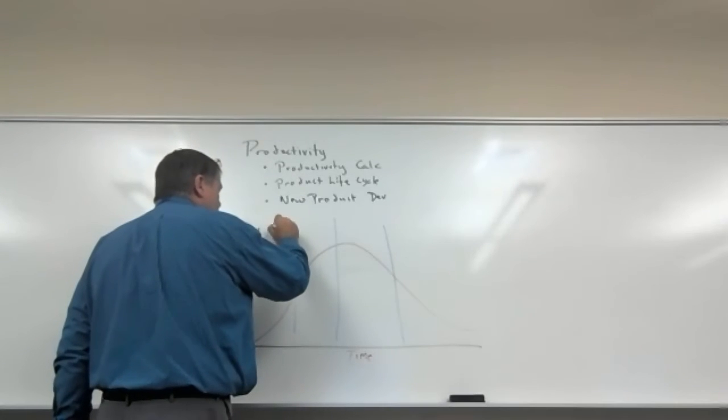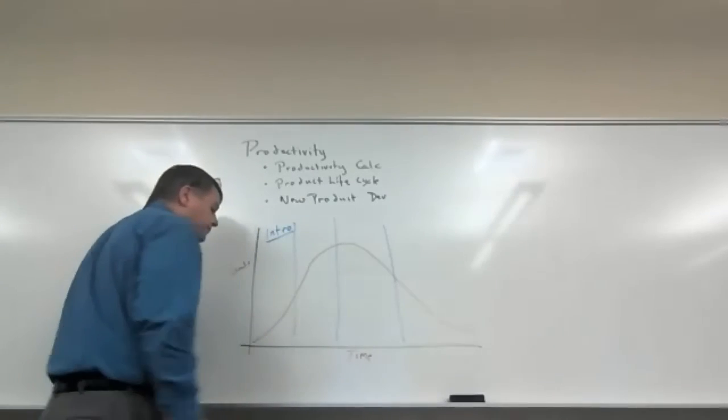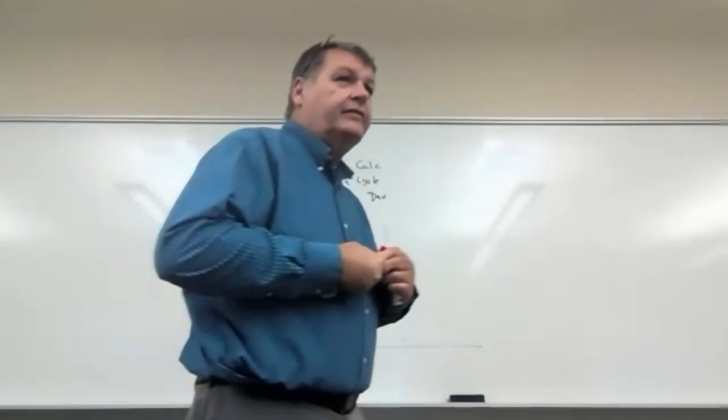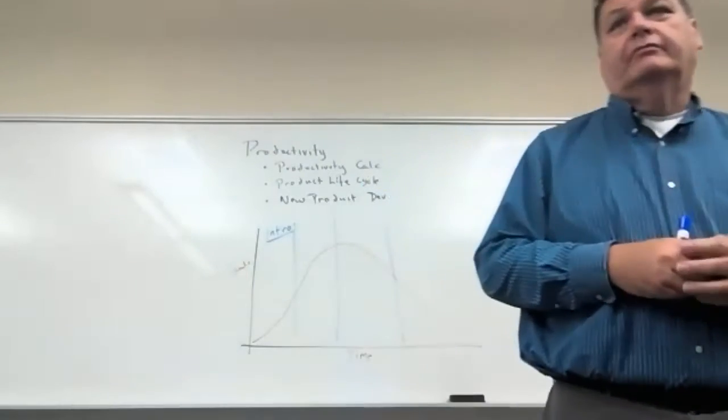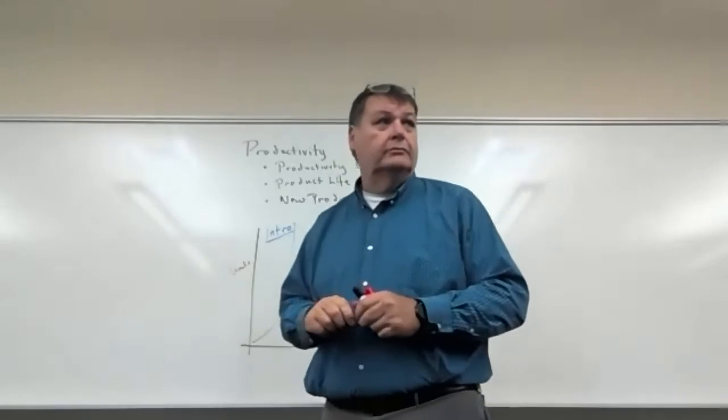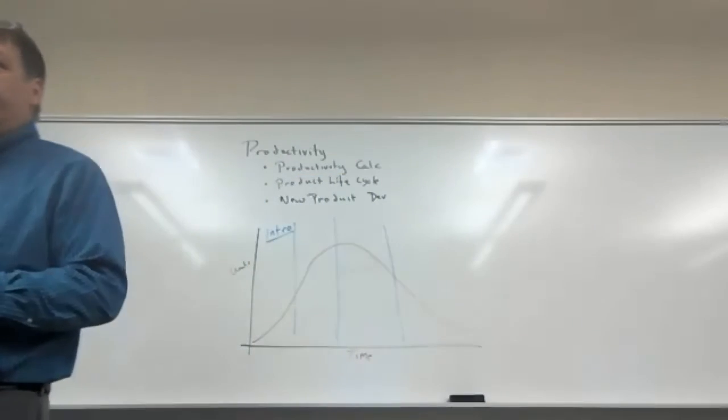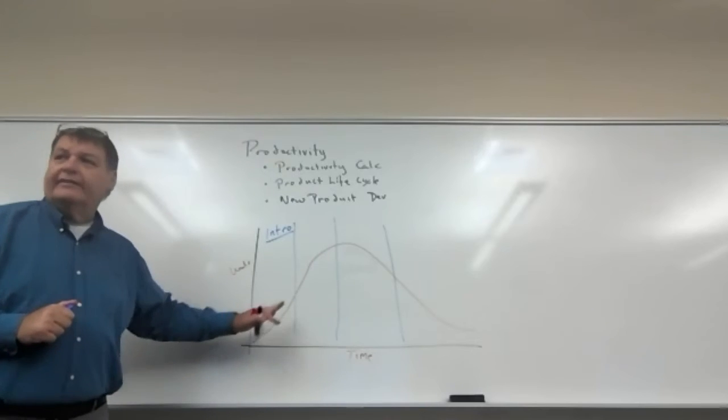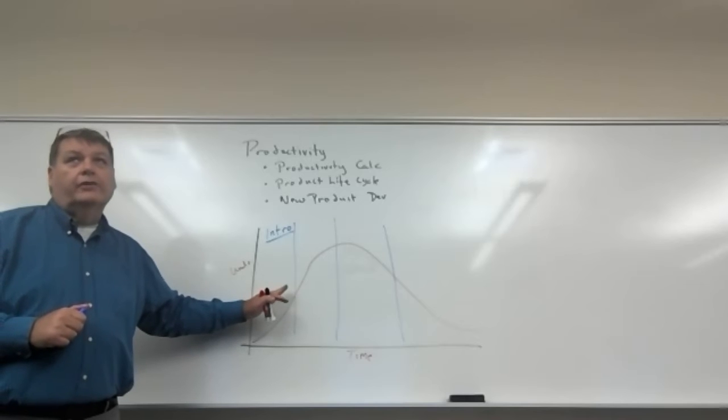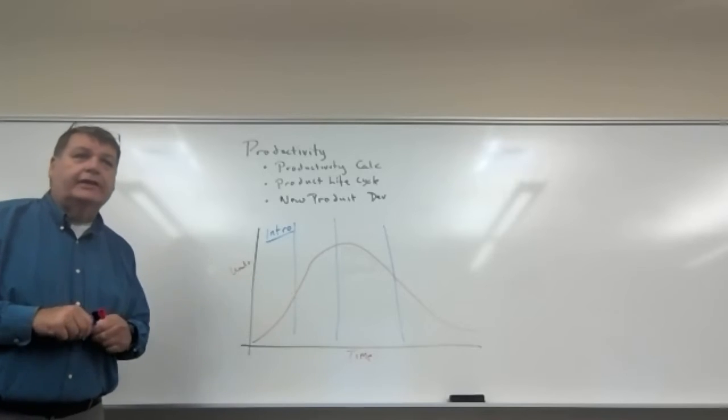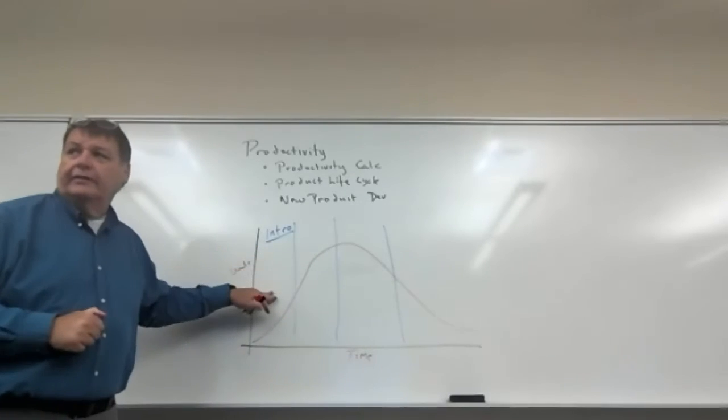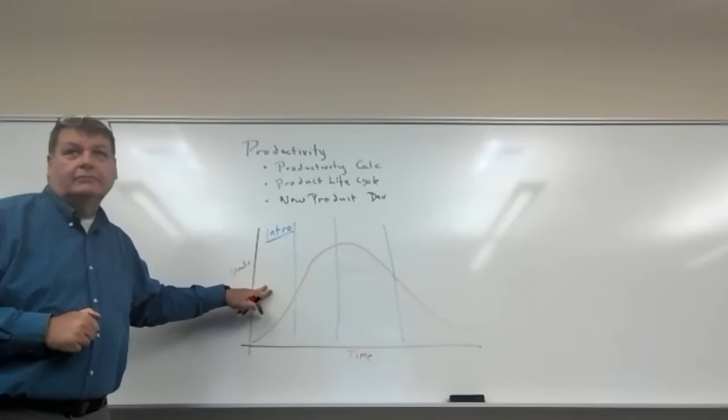So there are four phases. This is the introduction phase. Characteristics of this phase is that generally you have no competitors. Your profitability is extremely low. You're not selling enough product to break even generally. Your processes internally are not efficient. Your supply channels, your quantities are too small to get the discounts that you need to lower the cost. Costs are high, profitability is low, competition is near zero.